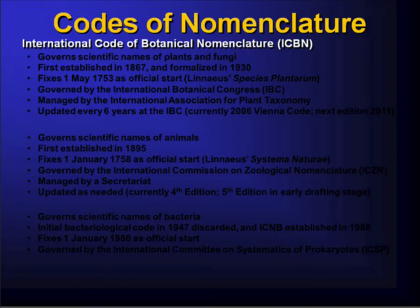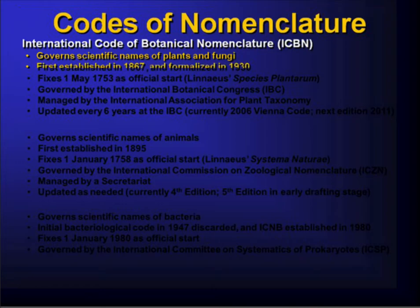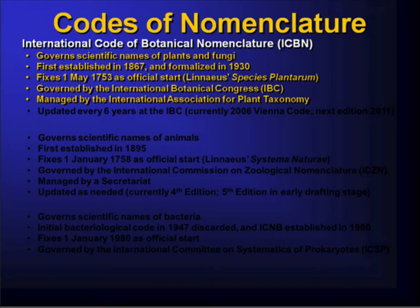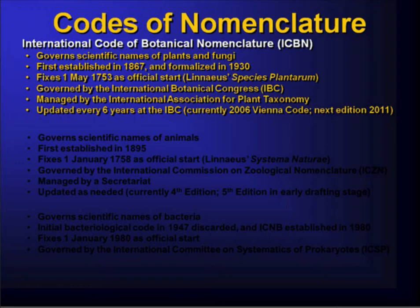Today we need to codify all of this. There are six major codes of scientific nomenclature actively used today. One of them is the International Code of Botanical Nomenclature, ICBN, which governs the names of plants and fungi. Fungi are not plants, but through tradition they are covered by this code. It was first established in 1867, formalized in 1930, and fixes May 1, 1753 as the official start of plant nomenclature — coinciding with the publication of Species Plantarum. It's governed by the International Botanical Congress and updated every six years; the current version is the Vienna Code, which took effect in 2006.